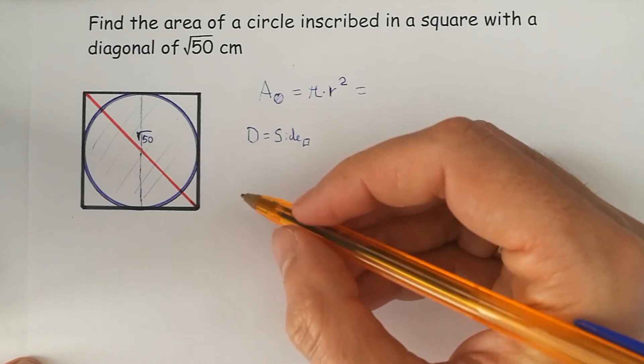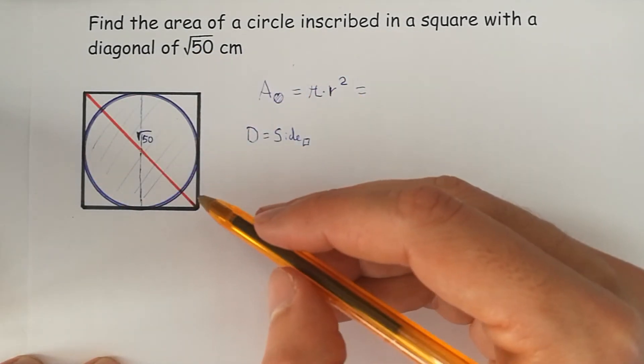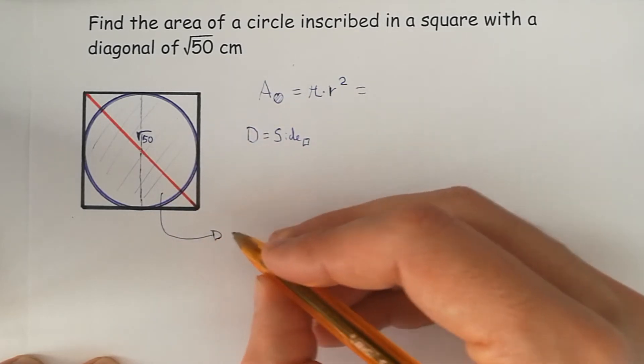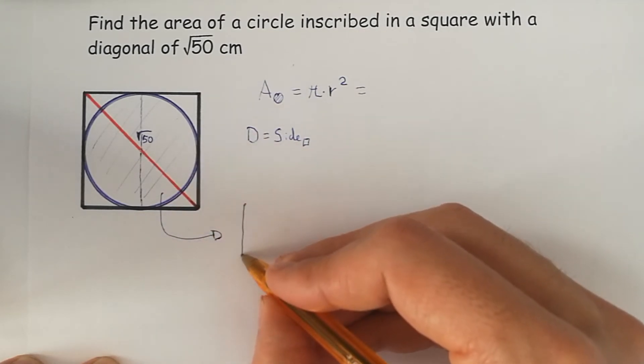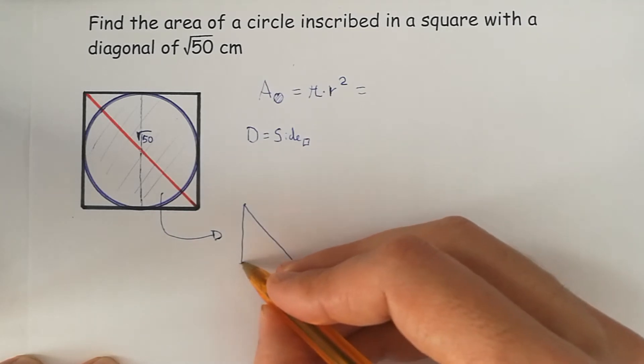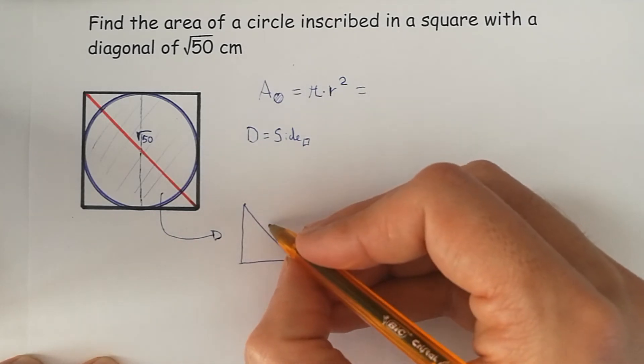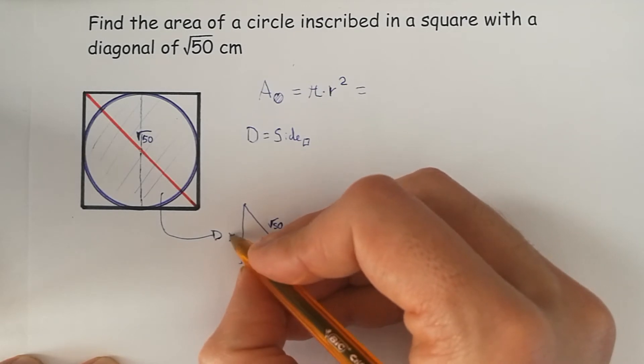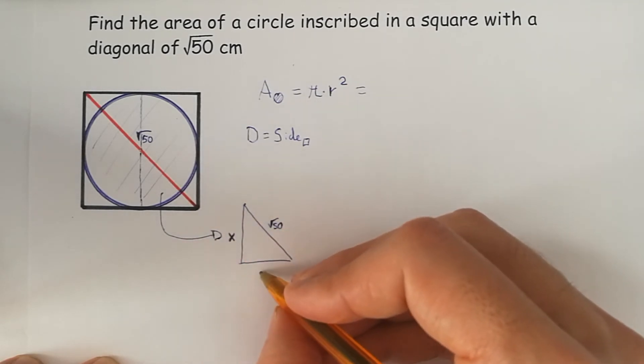So with the diagonal of the square we can draw a right triangle, and we know the hypotenuse and the length of the legs. It's going to be x.